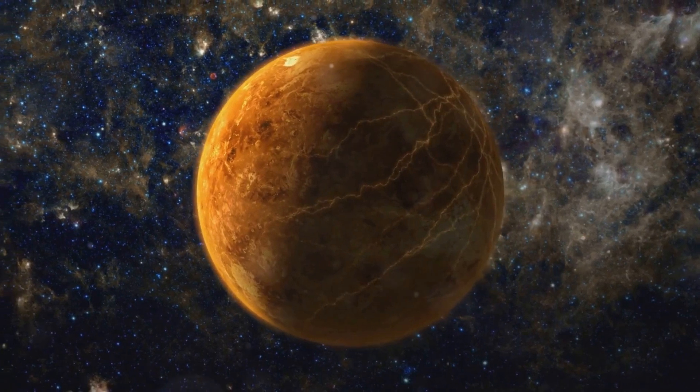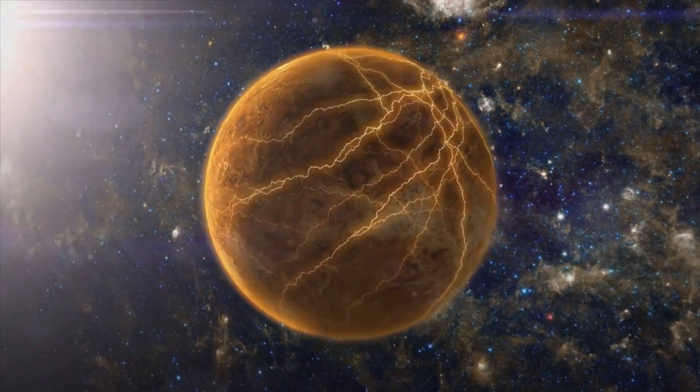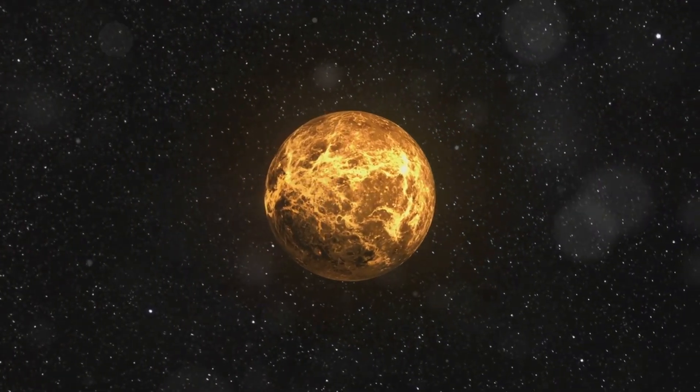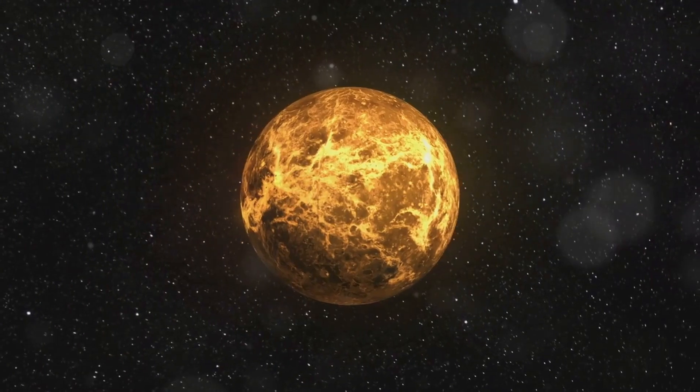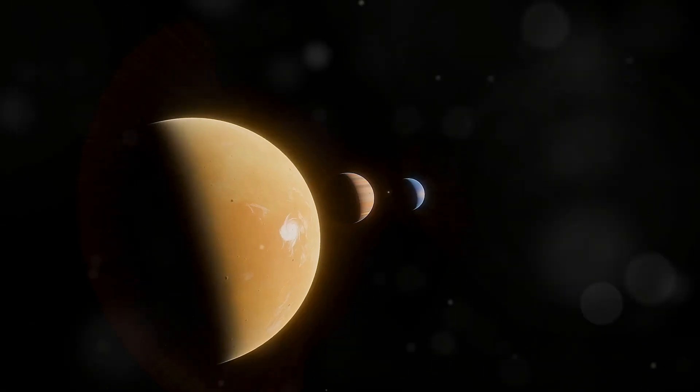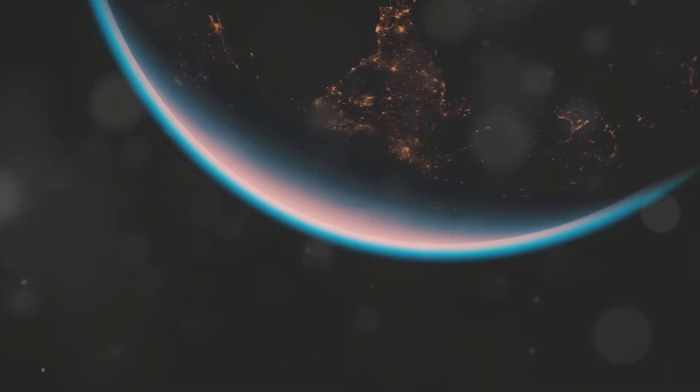Let's take a detour to 55 Cancri-e, a super-Earth located 40 light-years away in the constellation Cancer. This planet is a glittering jewel in the darkness of space, literally. 55 Cancri-e is a diamond planet. This planet is twice the size of Earth and eight times as massive. It orbits its star so closely that a year lasts only 18 hours. But here's the catch.